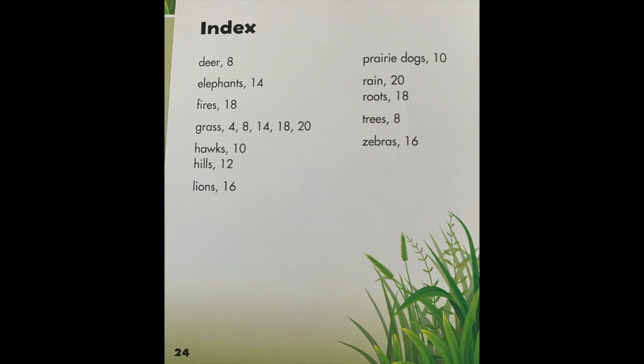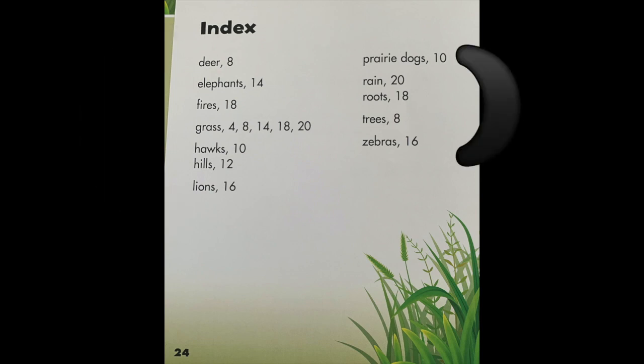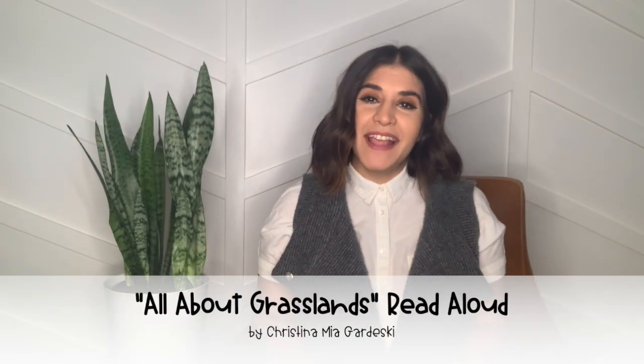If you go all the way to the end of the story, you will always find the index in a non-fiction text. The index is a list of words or subjects that are in the story and what pages you can find them in. These words are alphabetized, which means they're in alphabetical order. That's all for today, little birds. Hope to see you soon.